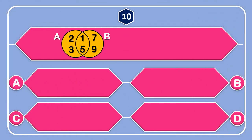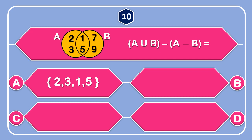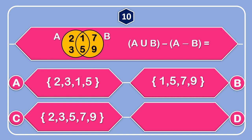Question number 10: If A union B — options: A: set of {2, 3, 1, 5}, B: set of {1, 5, 7, 9}, C: set of {2, 3, 5, 7, 9}, D: set of {2, 3, 7, 9}. Choose the correct answer.